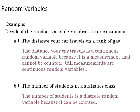Here are a couple of examples. First, the distance your car travels on a tank of gas is a continuous variable, because that can be fractional and not necessarily just whole numbers. However, the number of students in a statistics class is certainly a discrete variable, as you can't have a fraction of a student.